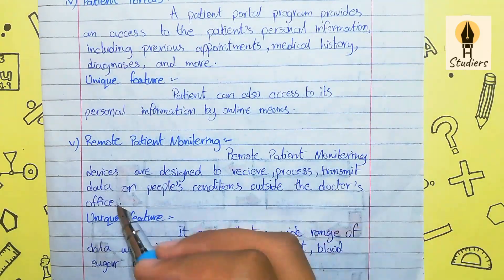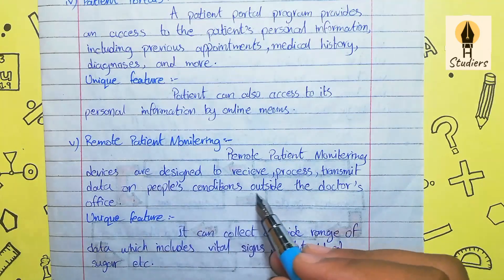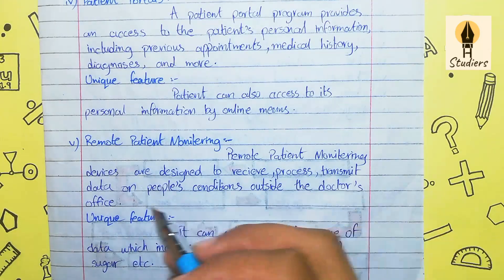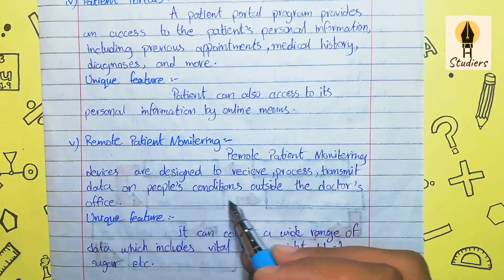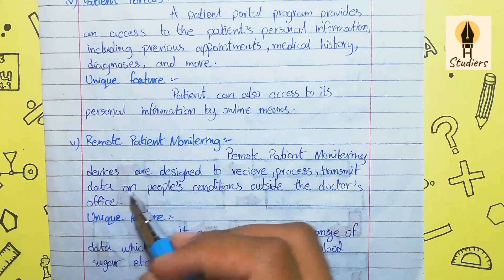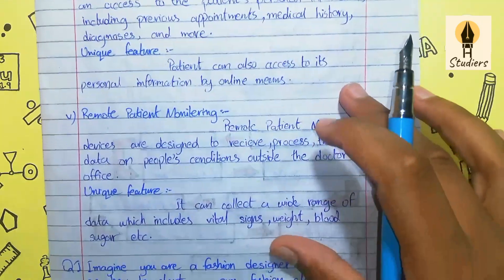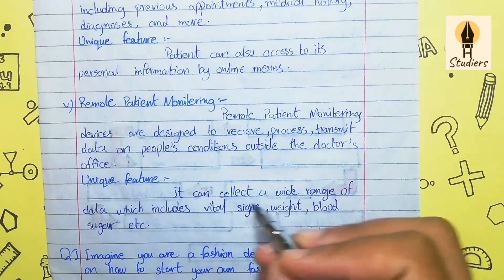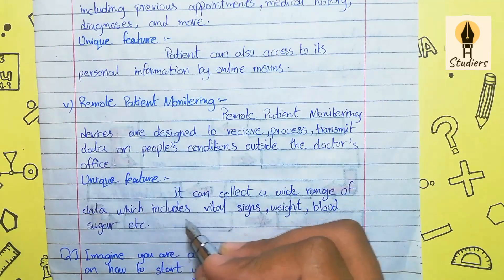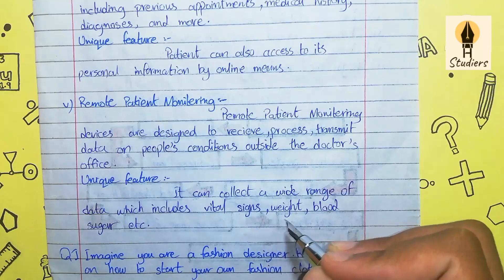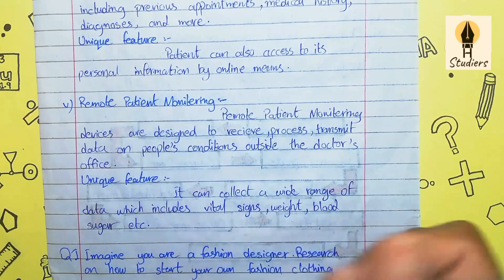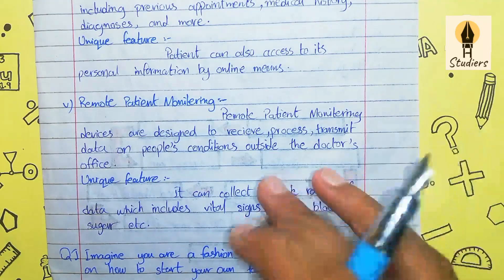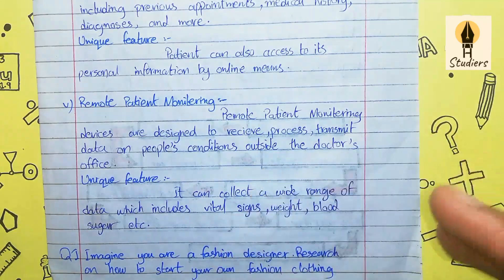Number five: Remote Patient Monitoring. Remote patient monitoring devices are designed to receive, process, and transmit data on people's conditions outside the doctor's office. Its unique feature is that it can collect a wide range of data, including vital signs, weight, and blood sugar.